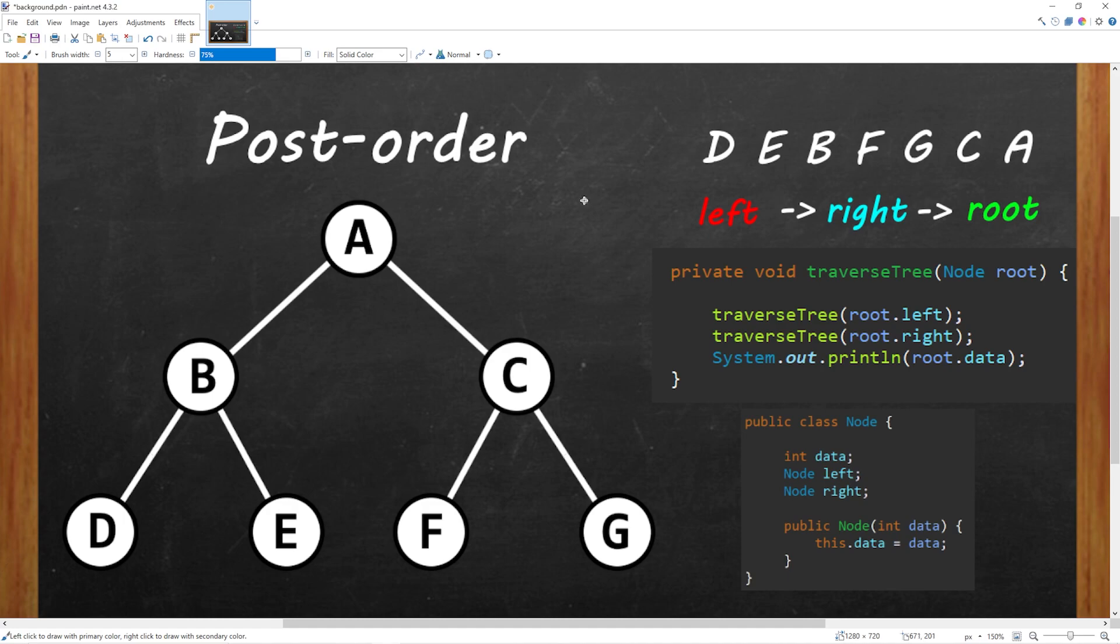And here's post-order traversal. It's used to delete a tree from leaf to root. And we follow this pattern: left, right, root. We will use recursion to visit the left children, then the right children, then the root.